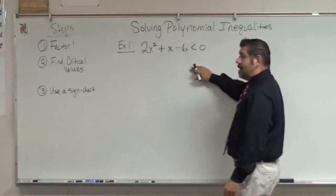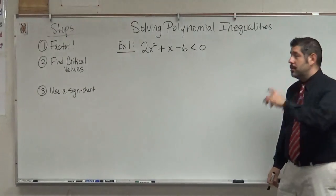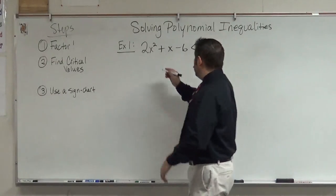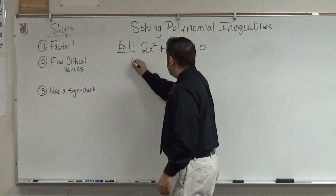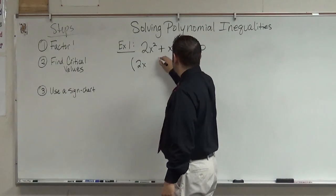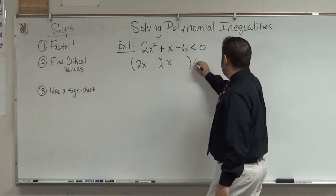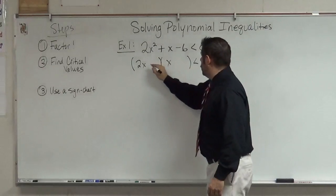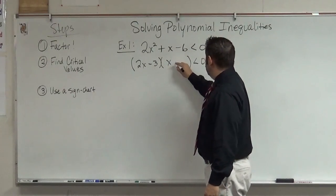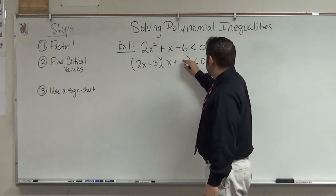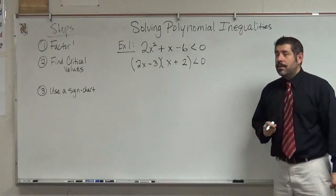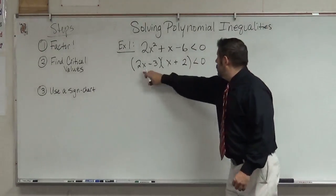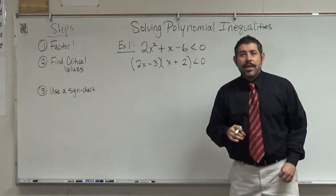So let's take a quadratic here for my first example. Step one is to factor. I'm going to factor this — it's going to be 2x times (x), and that's going to give me (2x minus 3)(x plus 2), because that'll factor that way. That's a good factor.